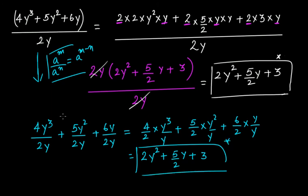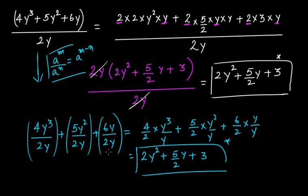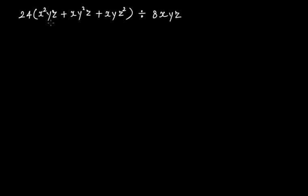In this case what you have done is division of a monomial by a monomial — if you separate each term of the numerator with the denominator. Now let's move to the next example: (24x²yz + xy²z + xyz²) ÷ 8xyz.